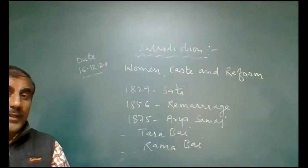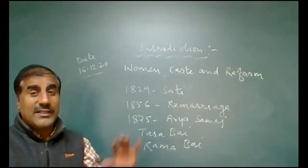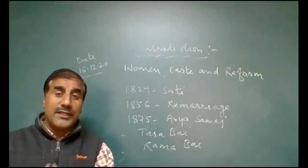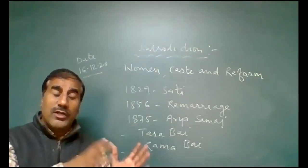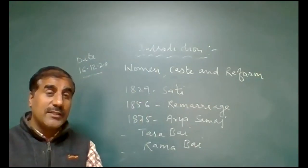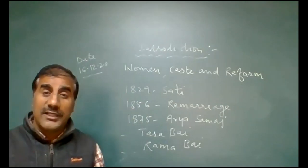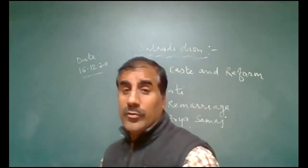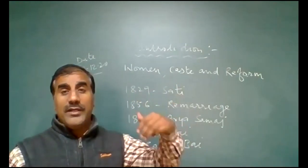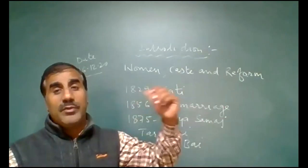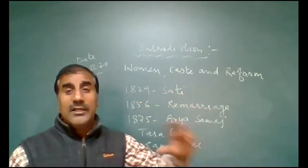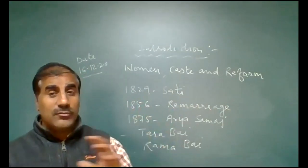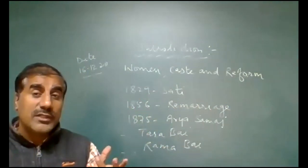In this chapter, we will discuss what were the early practices and what discrimination happened with women in India. On the basis of caste, society was divided into different categories. During early times, there was a certain trend: after the death of their husband, women committed Sati willingly or were sometimes forced. Sometimes society used force also. Sati and child marriage were trends of early time.